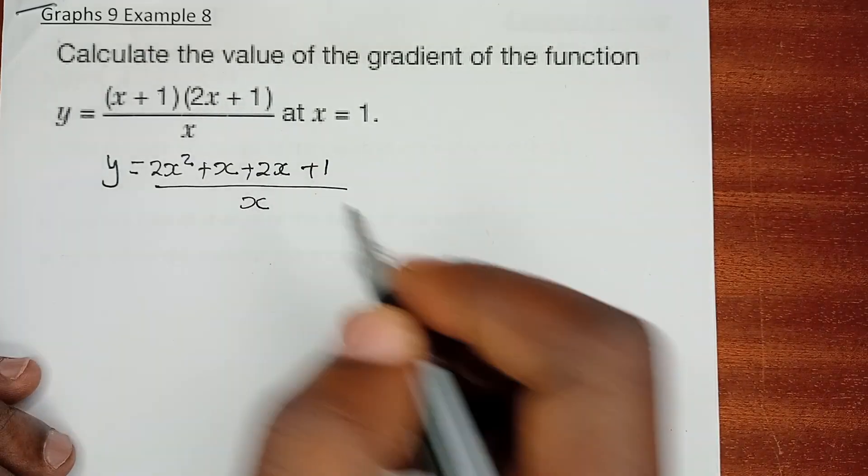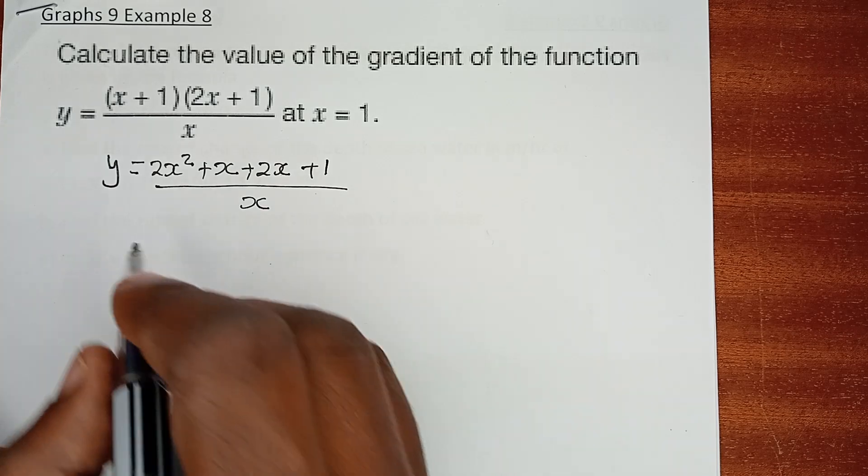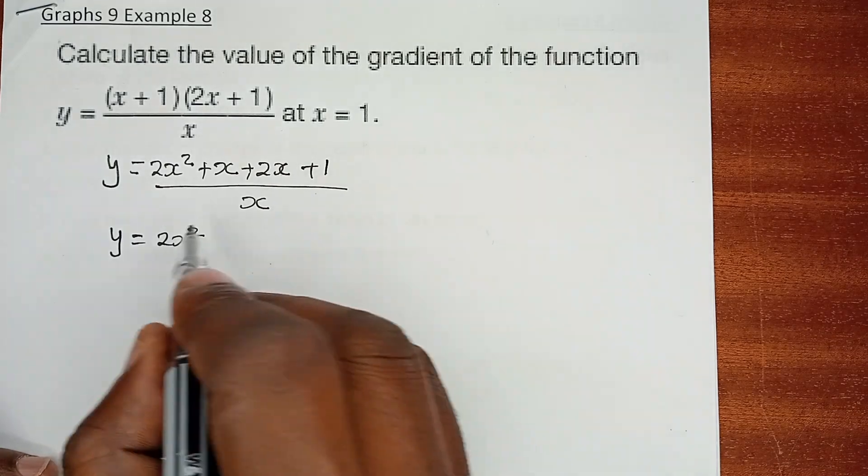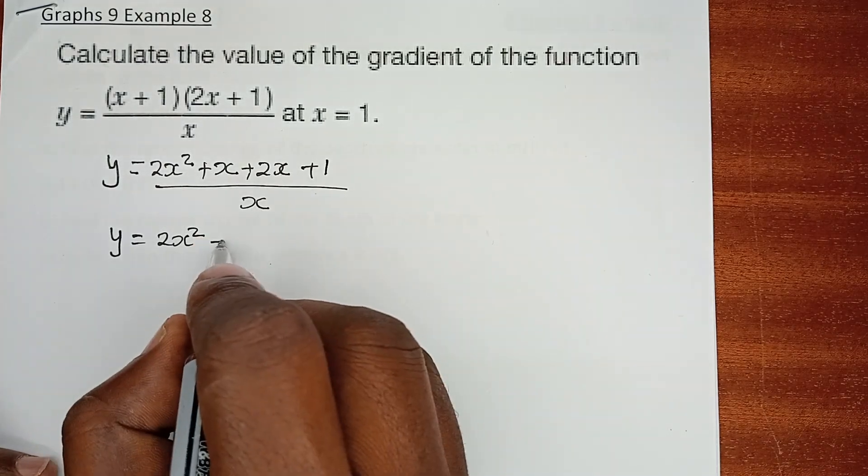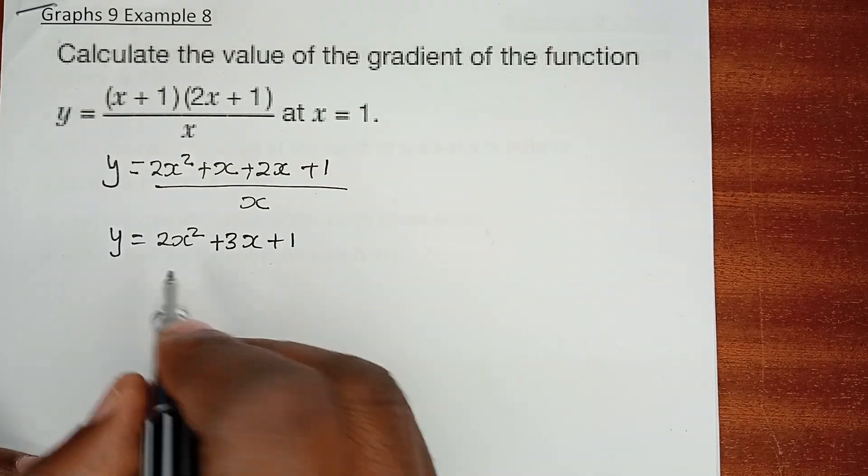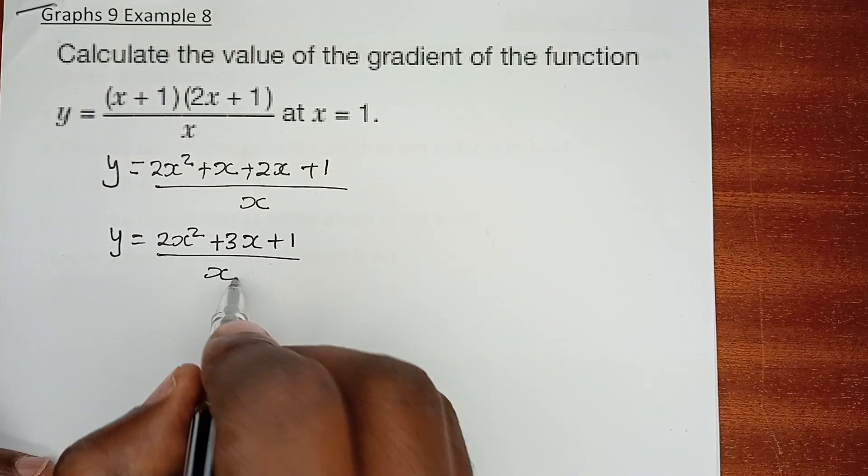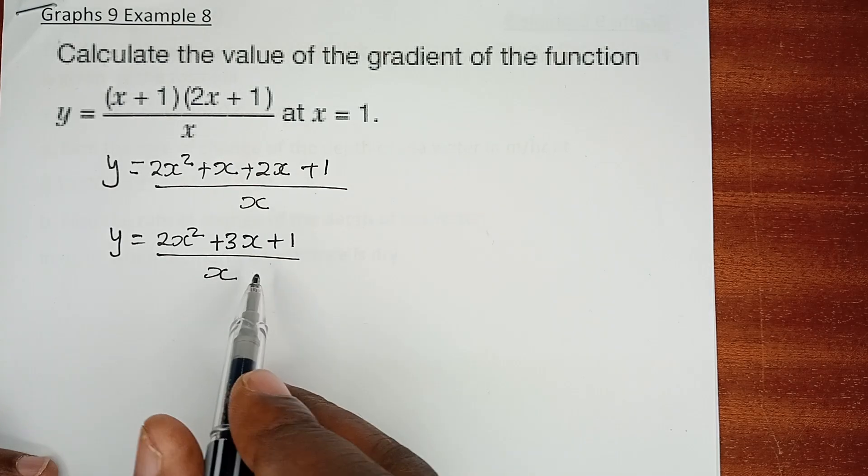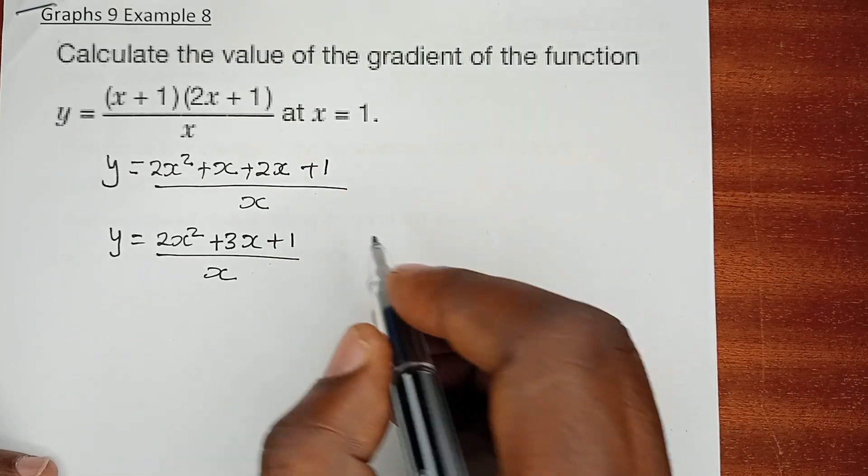Before we do anything else we collect the like terms and we have y equals 2x squared plus x plus 2x, meaning plus 3x plus 1, all this is still over x.